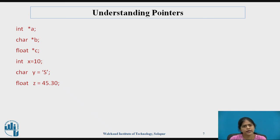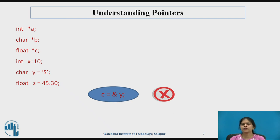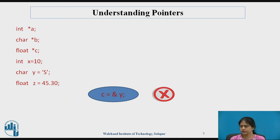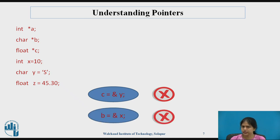Here x, y, and z are integer, character, and float variables respectively, with some values assigned. One thing is very clear: we cannot make a float pointer hold the address of a character. y is a character and c is a float pointer, so assigning &y to c is not possible. Similarly, we cannot make a character pointer hold the address of an integer — x is an integer and b is a character pointer, so b = &x is also not allowed. Every pointer variable can only save the address of a similar data type variable.